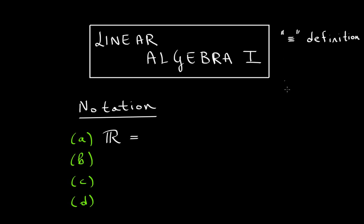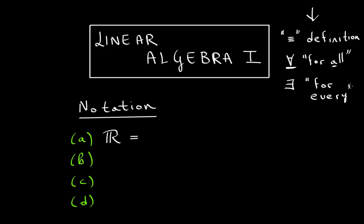The symbols for the upside-down A and the flipped E are rare, but you should know them. The upside-down A means 'for all' — the A's kind of match. And the flipped E stands for 'there exists' or 'every.' You might see these if you read a linear algebra textbook.